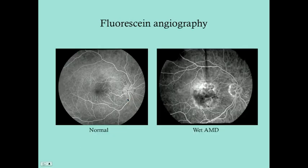Another test is fluorescent angiography, which shows where the blood is in the eye. In a normal fluorescent angiogram, there is not much visible around the macula — it should appear as a darkish spot. In wet AMD, the angiogram shows bright spots of bleeding around the macula, because wet AMD involves abnormal vascularization and angiogenesis in the macular area.